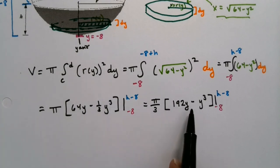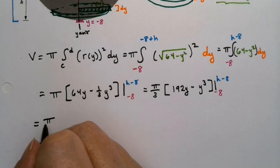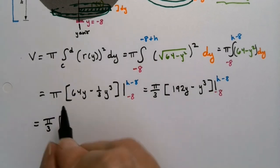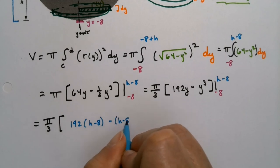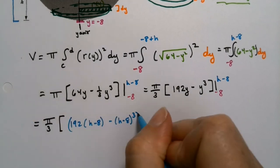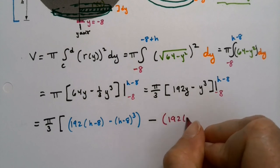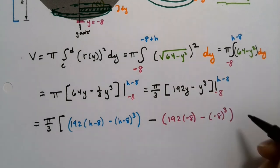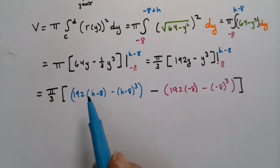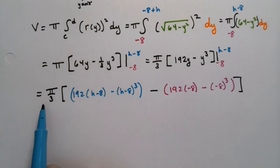Now it's π/3 times [(192y − y³)] evaluated from −8 to h − 8. I factored out the 1/3 to avoid dealing with fractions while cubing (h − 8). Substituting the upper limit gives: 192(h − 8) − (h − 8)³. Substituting the lower limit gives: 192(−8) − (−8)³.